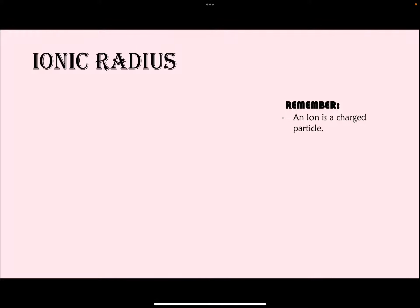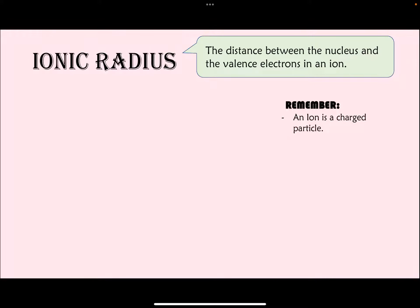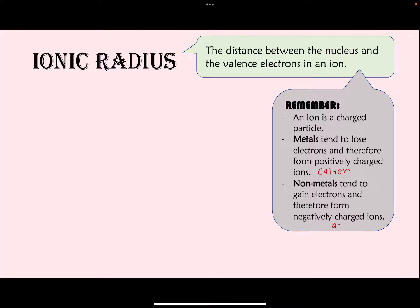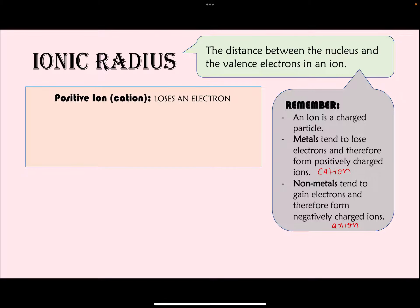Let's talk about ionic radius — the distance between the nucleus and valence electrons in an ion rather than an atom. Quick reminder: an ion is a charged particle. Metals tend to lose electrons, forming positively charged ions called cations. Non-metals tend to gain electrons, forming negatively charged ions called anions.